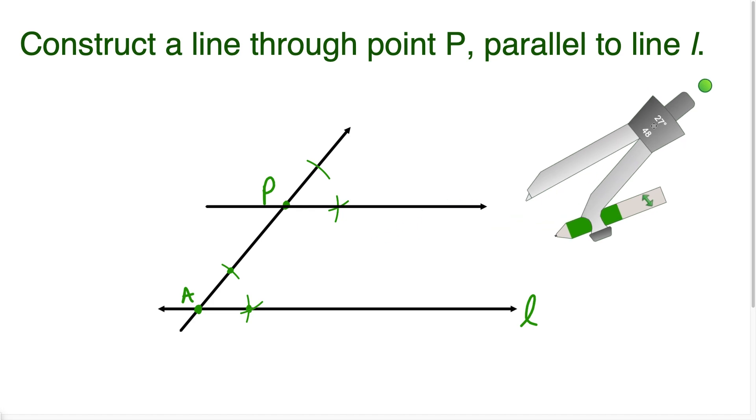Now if we label everything and conclude, let's put some arrows here at the end of both of these lines. If I name this line, let's call it line M. I could say that line L is parallel to line M, and line M does go through point P.